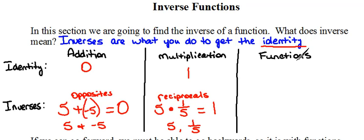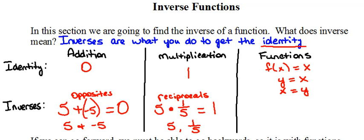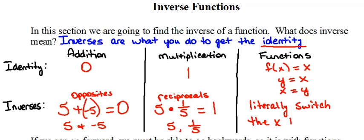So let's go to functions now. There is an identity for functions, and we've already learned it — it's part of your library of functions. That function f(x) = x is the identity function, which we could also write as y = x. Notice that in this identity function, x and y are identical, so we could write x = y and it would be the same thing. For inverse functions, you literally switch the x and the y. And you'll remember from what we did last time, we proved that functions are inverses by doing the composition.